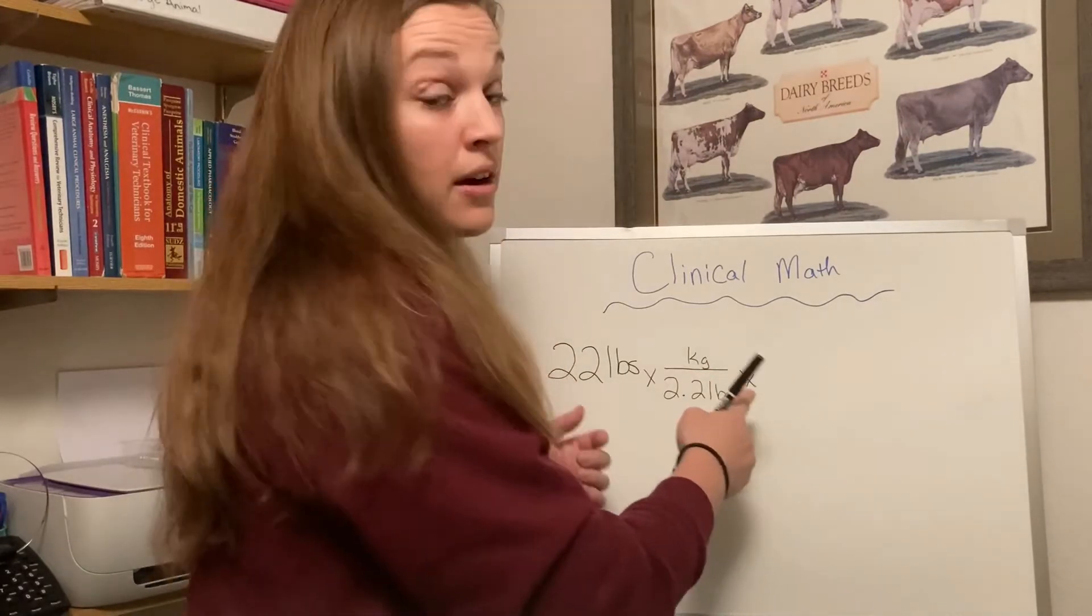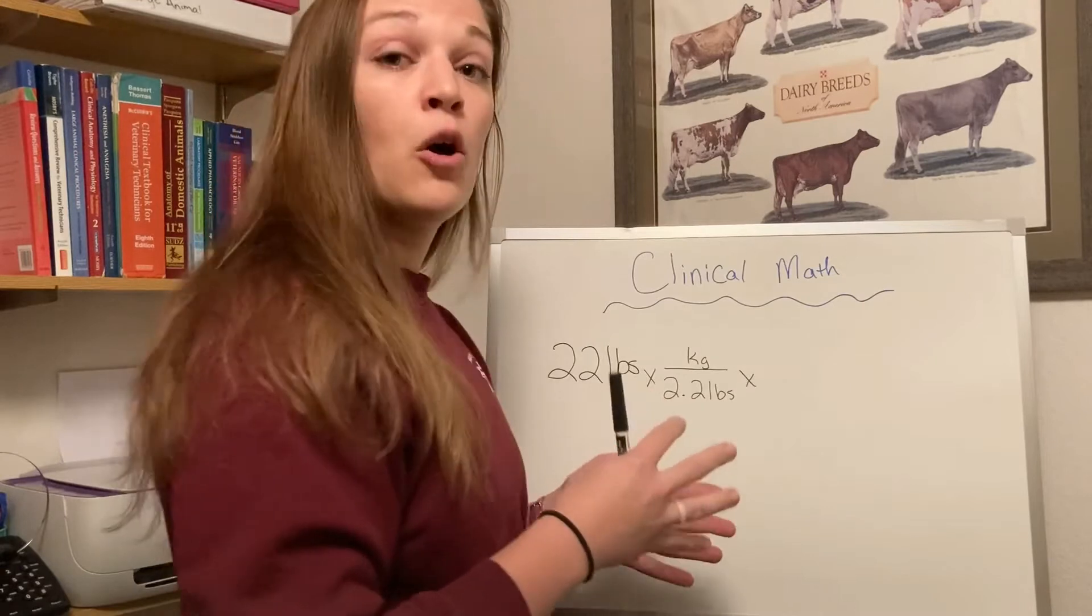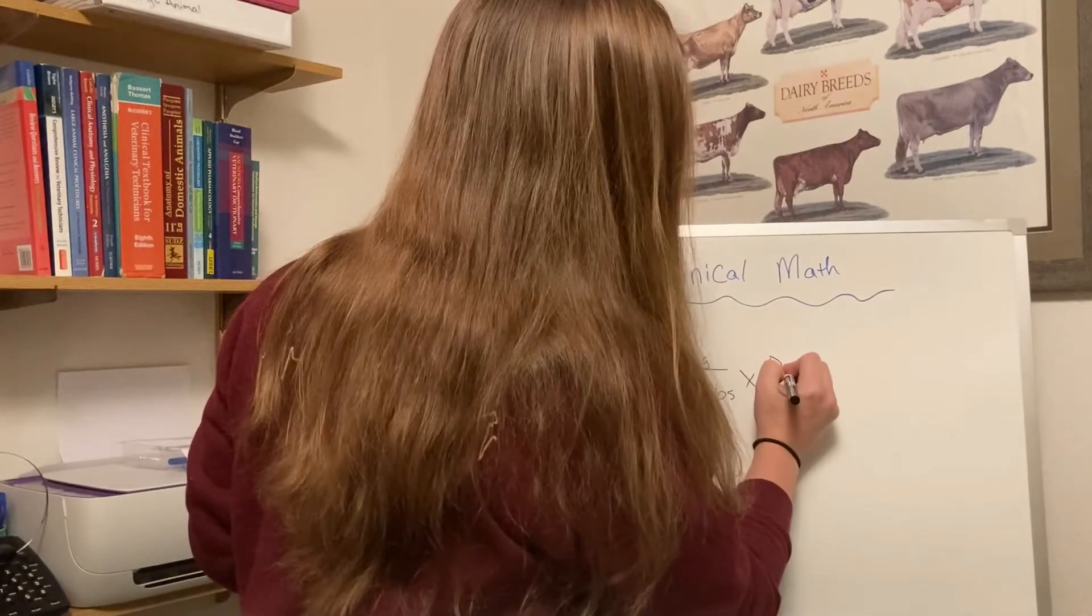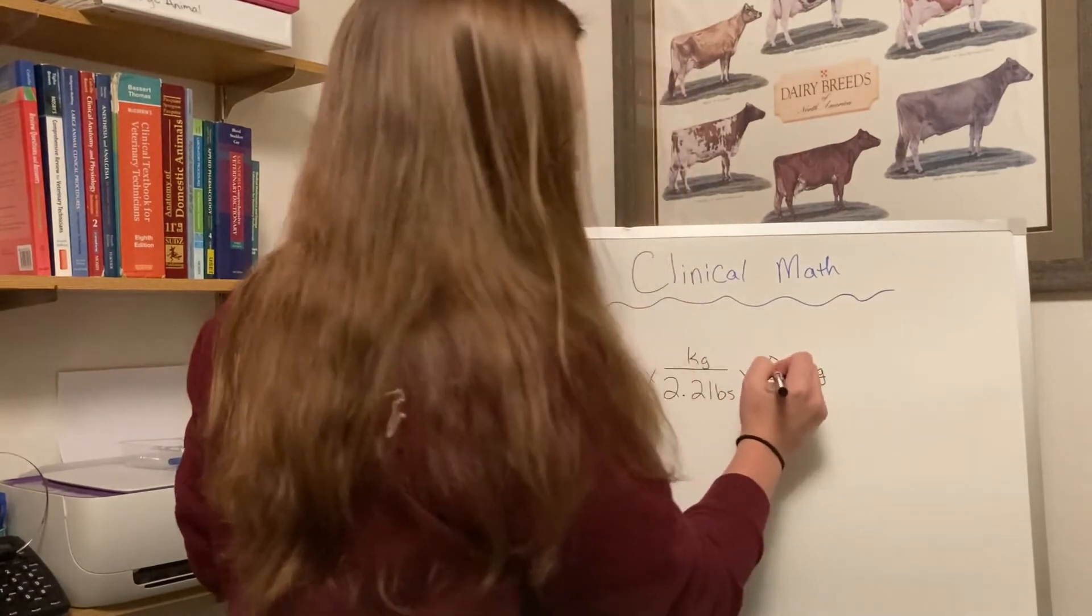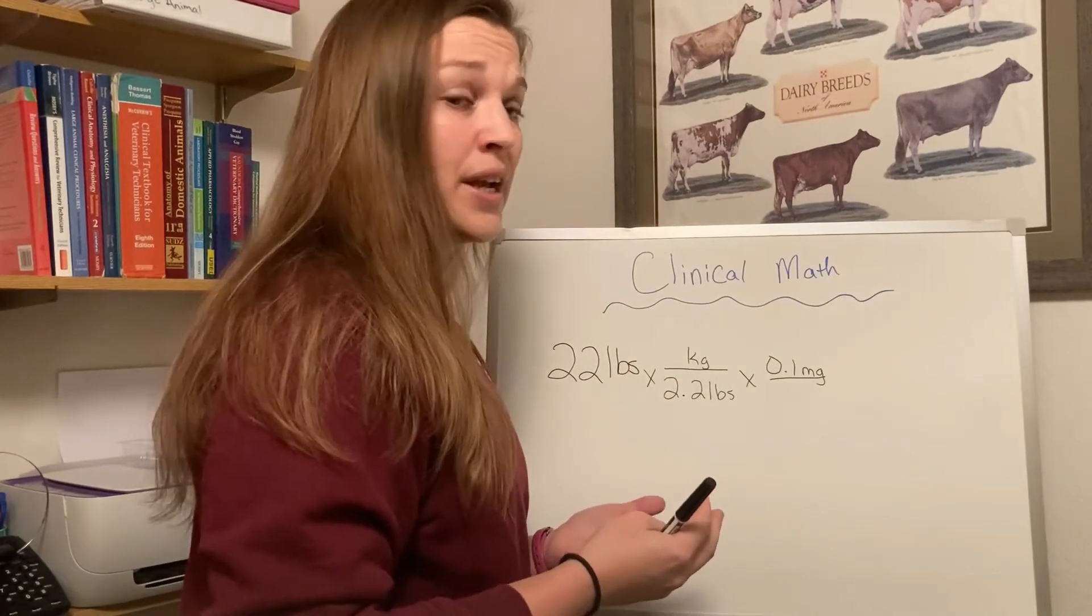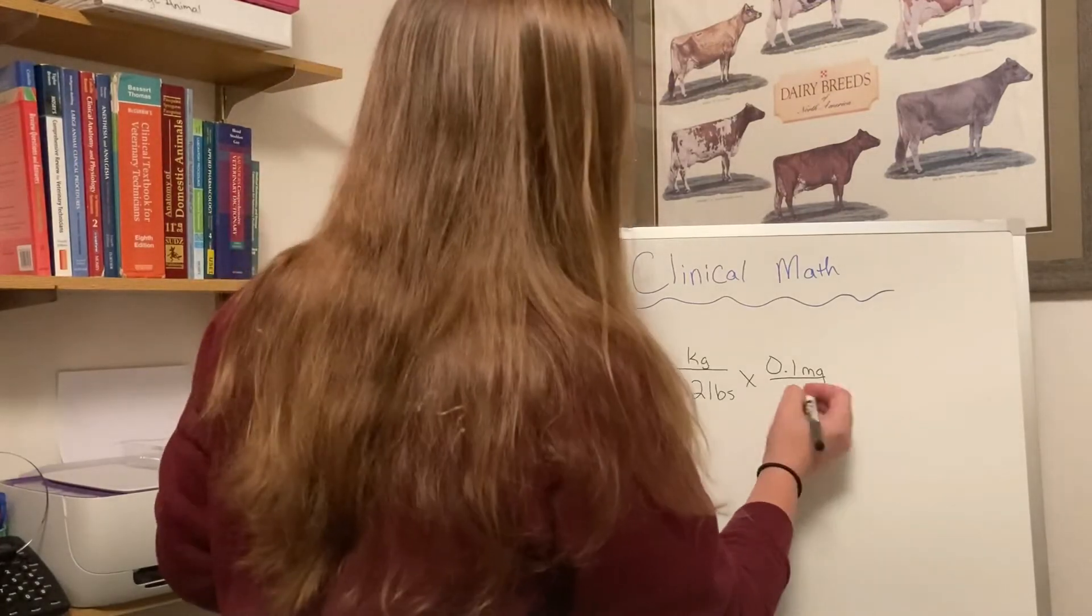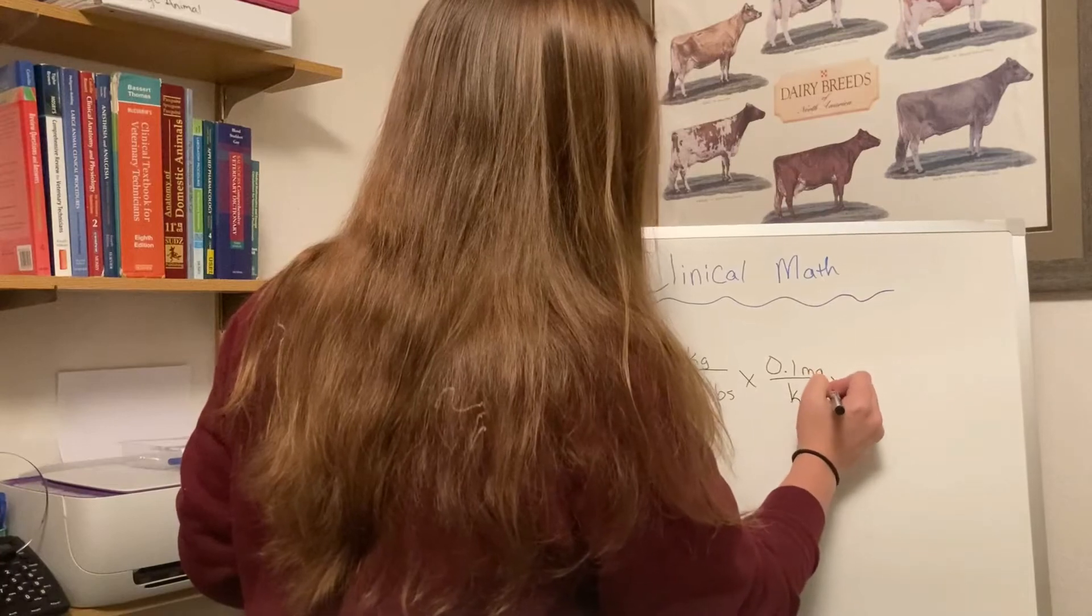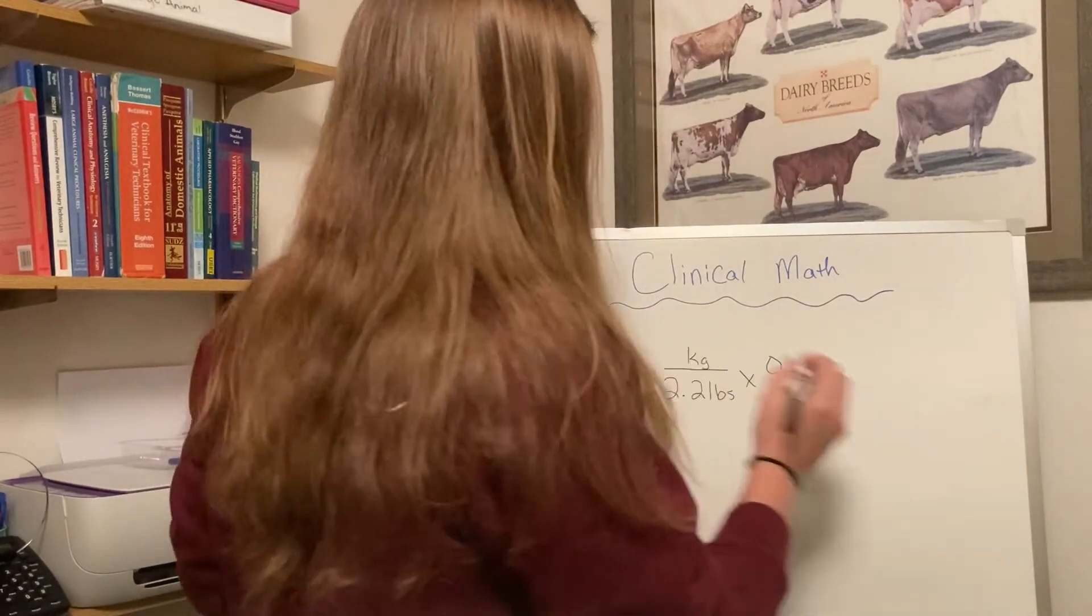Then the next step is going to be our dosage. A dosage that's used with hydromorphone is 0.1 mg per kg. Always make sure that you write your zero in here as the placeholder so that someone doesn't come by and maybe not see your decimal point and think that you're wanting 1 mg per kg which is drastically different. So 0.1 mg per kg. And then the concentration we determined for hydromorphone is 2 mg per mL.